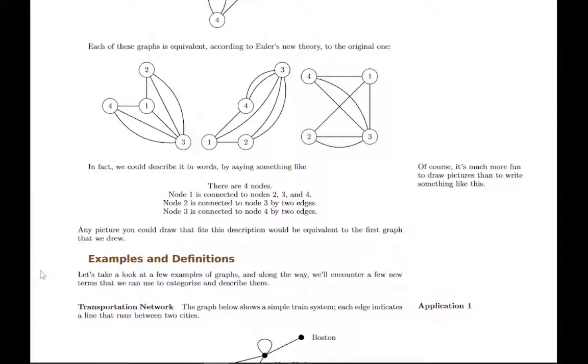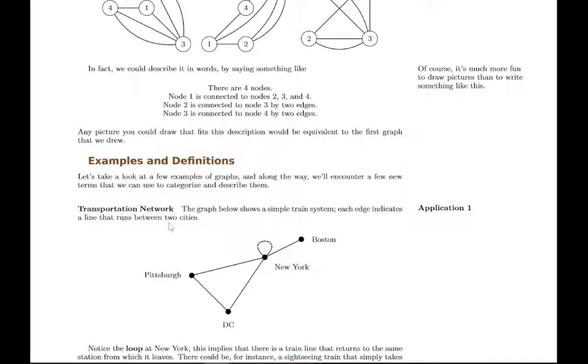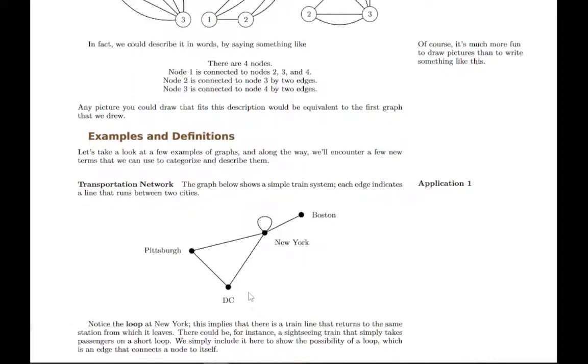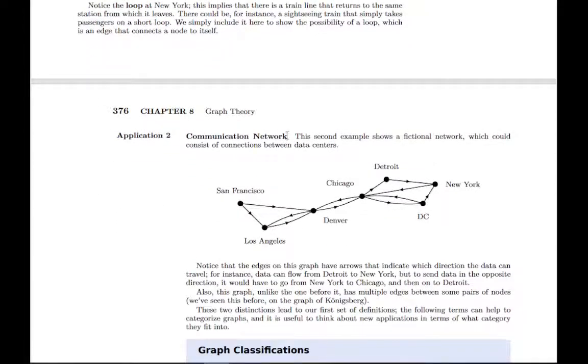The rest of the section goes through some examples of different applications. Here's a simple transportation network where we've got cities connected by trains. Notice there's this loop here, maybe a sightseeing train that takes you through the city and back to the same station. Then you can have a communication network between cities where you have linkages where data can flow or you can make phone calls or whatever kind of communication system you have set up.